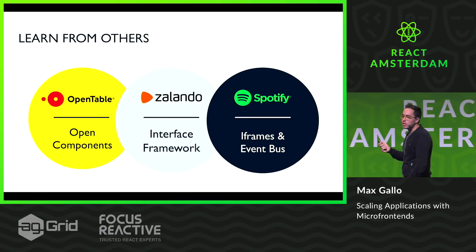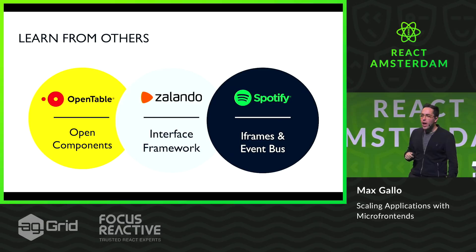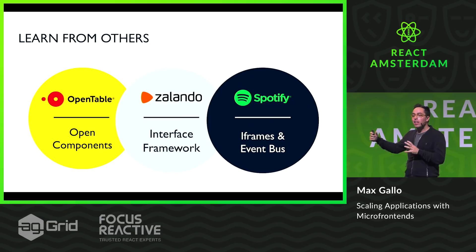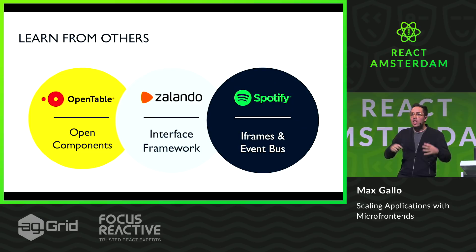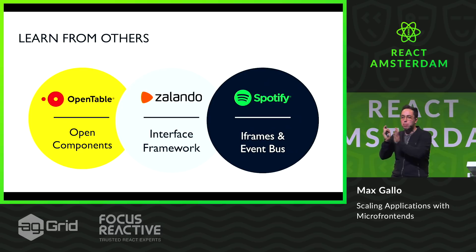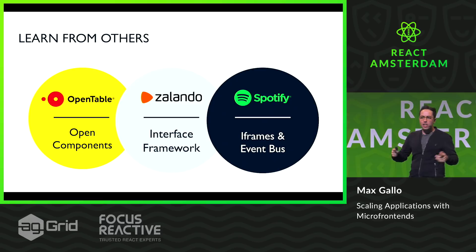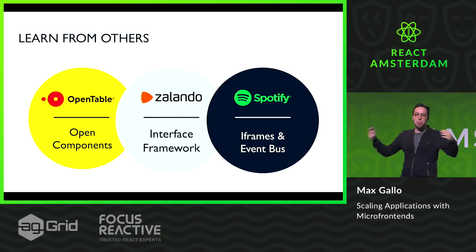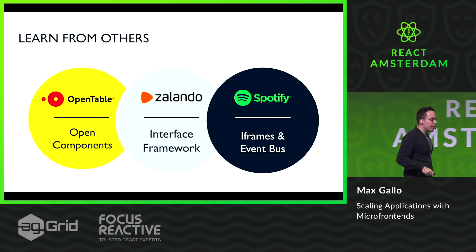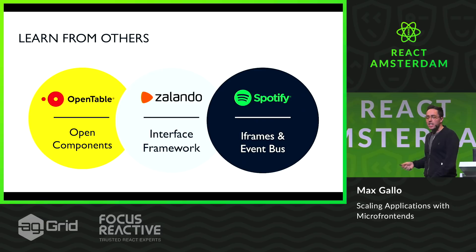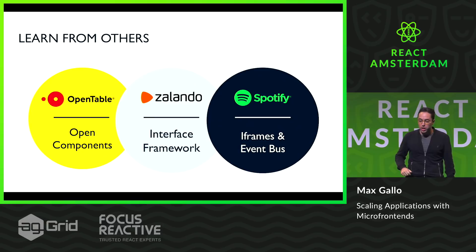Zalando, another pioneer with the Mosaic project, operates similarly but just for the frontend. They use various libraries under Mosaic to allow different teams to work on different parts of the website. They use fragments — small pieces of the page — owned by different teams and combined by a template engine. Their engine was Taylor.js and is now called Interface Framework.